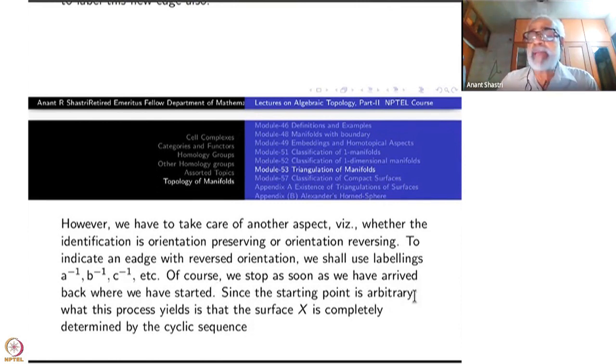Of course, we stop as soon as we have arrived back where we started. Since the starting point is arbitrary, what this process means is that the surface X is completely determined by the cyclic sequence. Suppose I start with one point, you start with another point. So whatever from my point to your point in the beginning, for you that part will occur at the end. Instead of A, B, C, D, you may get B, C, D, A. So up to cyclic permutation, the convex polygon and its quotient is completely determined by this sequence.